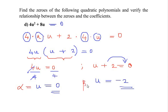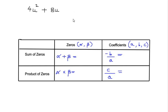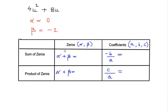So the first root is zero and the second root is negative two. Let us consider alpha as the first root (zero) and beta as the second root (negative two). The first part of the question is solved — we have the zeros of the polynomial. Now let us verify the relationship between the zeros and the coefficients. Finding the sum of zeros: alpha + beta = 0 + (-2) = -2. Finding the product of zeros: 0 × (-2) = 0.